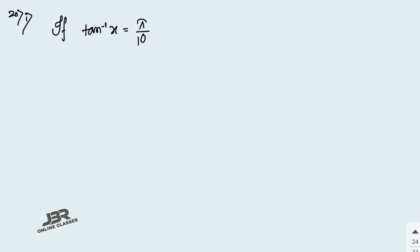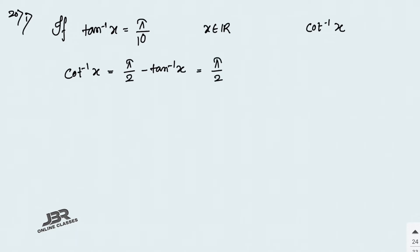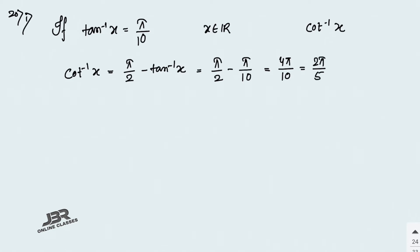Sum number 20, part 1: if tan⁻¹(x) = π/10 for some x belonging to ℝ, find the value of cot⁻¹(x). Since cot⁻¹(x) = π/2 − tan⁻¹(x), that means π/2 − π/10 = 4π/10 = 2π/5. So cot⁻¹(x) = 2π/5. That is your answer.